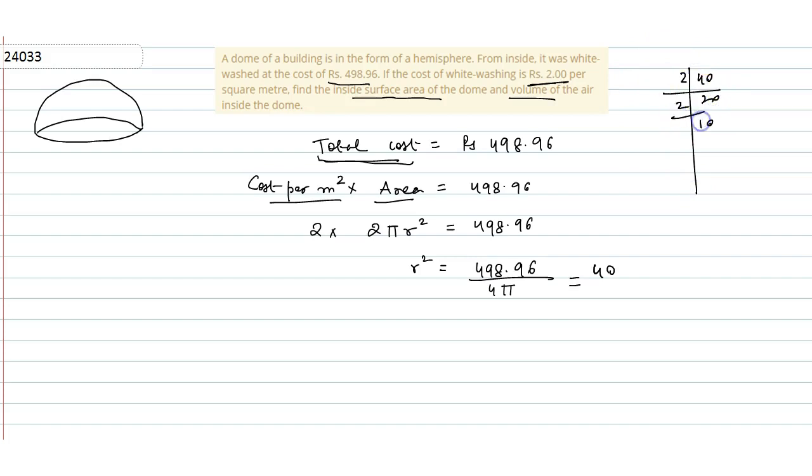So 2, 20's, 2, 10's, 2, 5's, and 5, 1's. So we will get 2√10. So we will get r's value as 2√10.